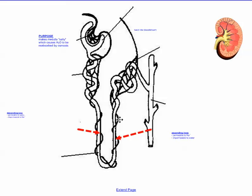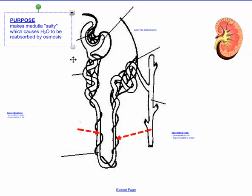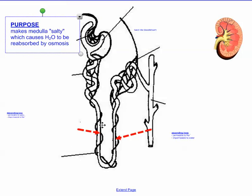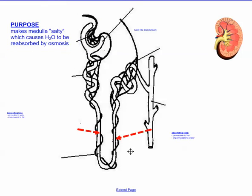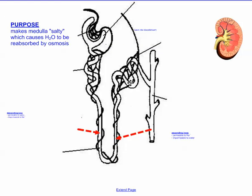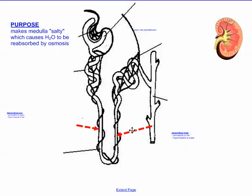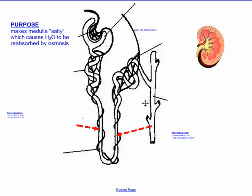So this is called the loop of Henle. The purpose of this whole little trombone loop down here is to make the area around it very salty, or high in salt and ion concentrations. The medulla again is this dark pink area, and why is that going to be good? It's gonna help to concentrate the urine and remove some of the water, and it's gonna help in the final stage here called the collecting duct, which we'll see on the next screen.